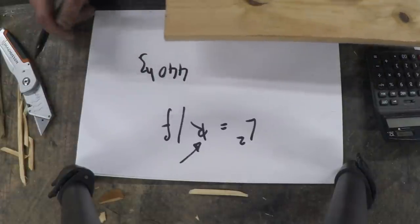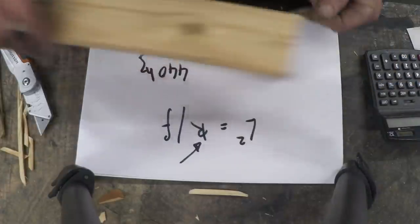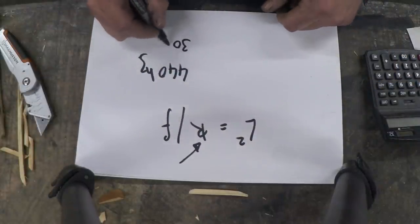440 hertz incidentally is A, center A. So we get that and it is 30 centimeters long.